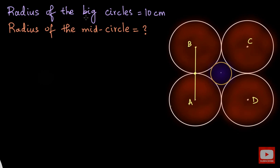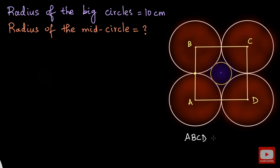In the same way, if I join B and C through the point of contact, this will also be a straight line. If I join A and D, this will also be a straight line. And if I join C and D, this will also be a straight line. Now I am going to make another claim: that ABCD is a square.